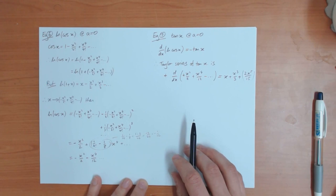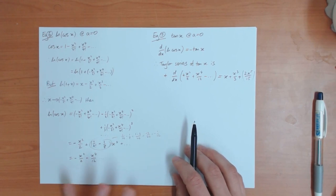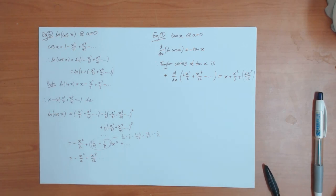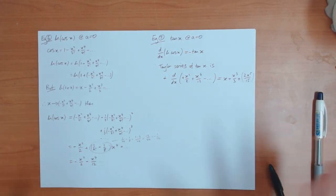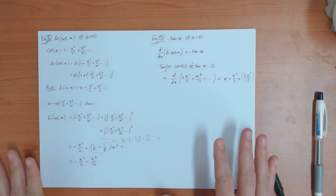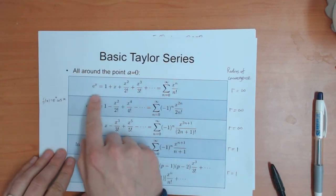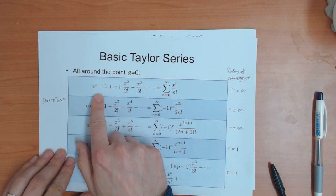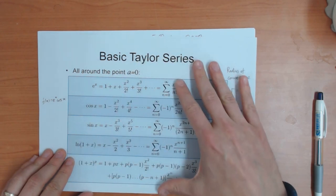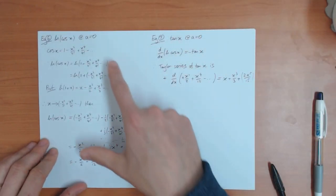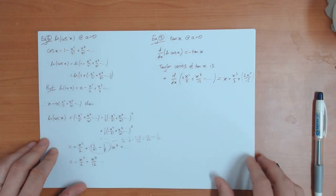So these are seven examples, and they are all similar to the examples on the practice sheet and on the test this week. There's going to be a range of questions: some will be easy, like just the basic Taylor series which I suggest you learn, and one or two will be more difficult like these examples.